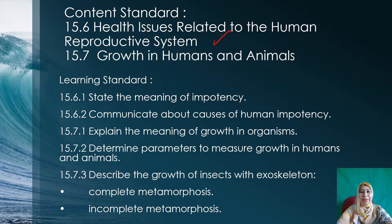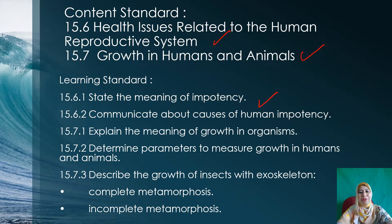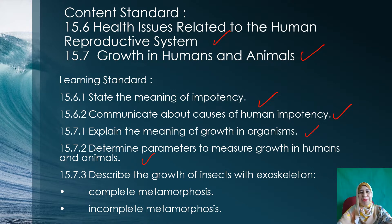15.7, Growth in Humans and Animals. The learning standards are 15.6.1, State the Meaning of Impotency; 15.6.2, Communicate about the Causes of Human Impotency; 15.7.1, Explain the Meaning of Growth in Organism; 15.7.2, Determine the Parameters to Measure Growth in Humans and Animals; 15.7.3, Describe the Growth of Insects with Exoskeleton under Complete Metamorphosis and Incomplete Metamorphosis.